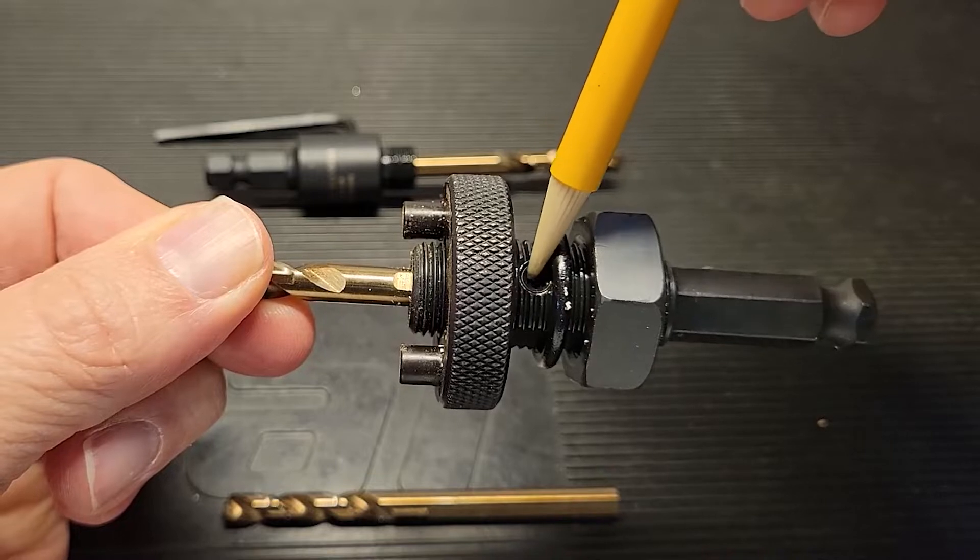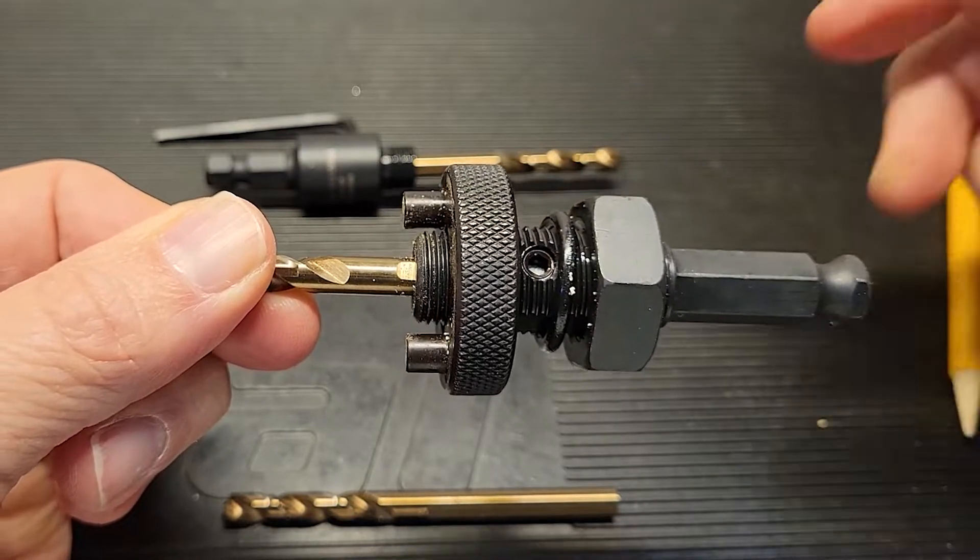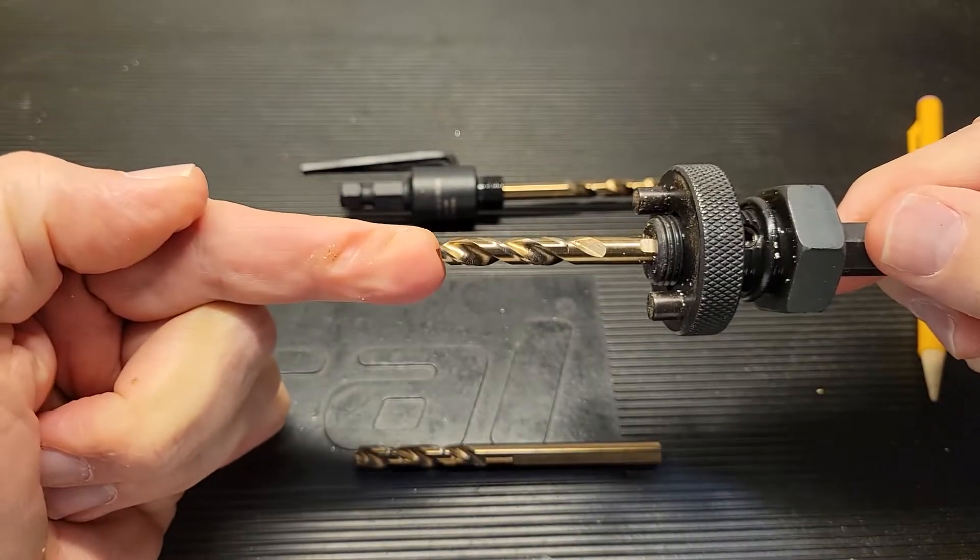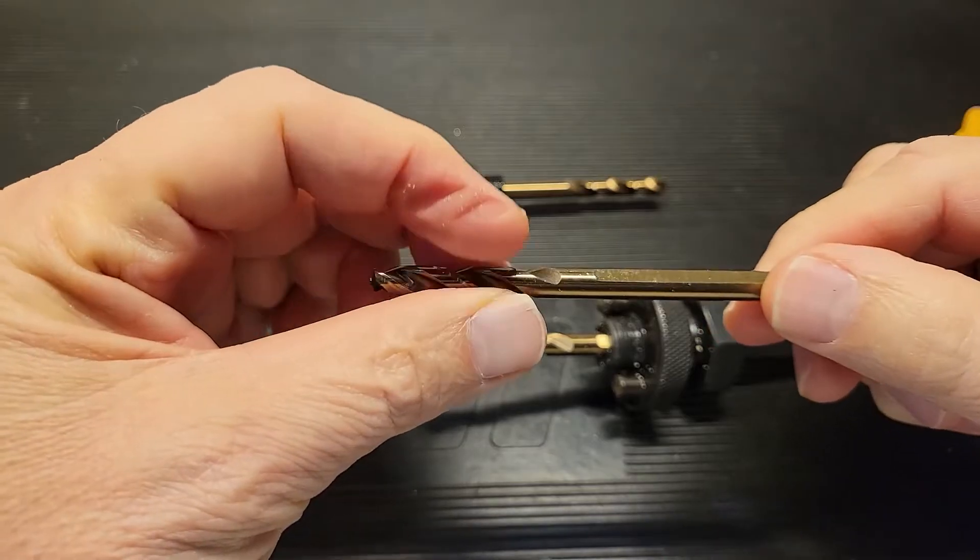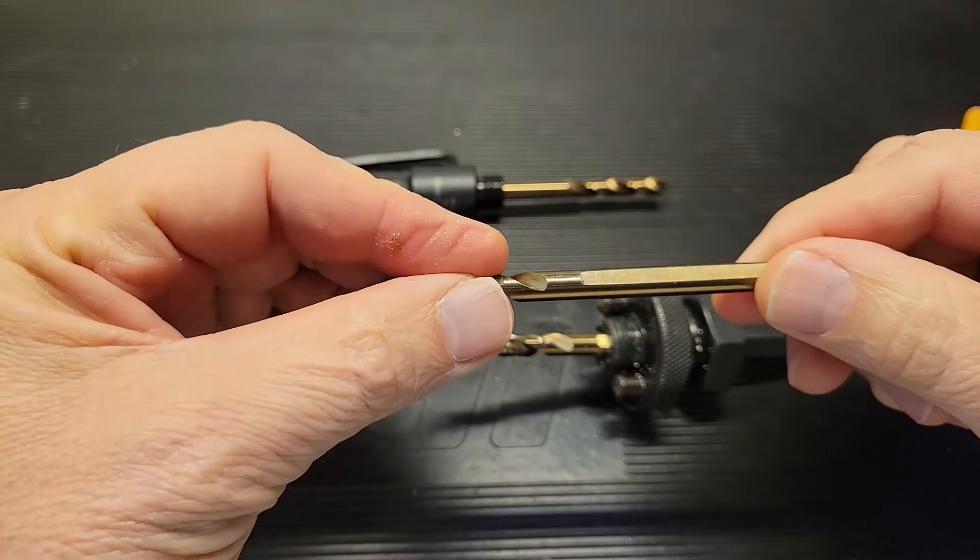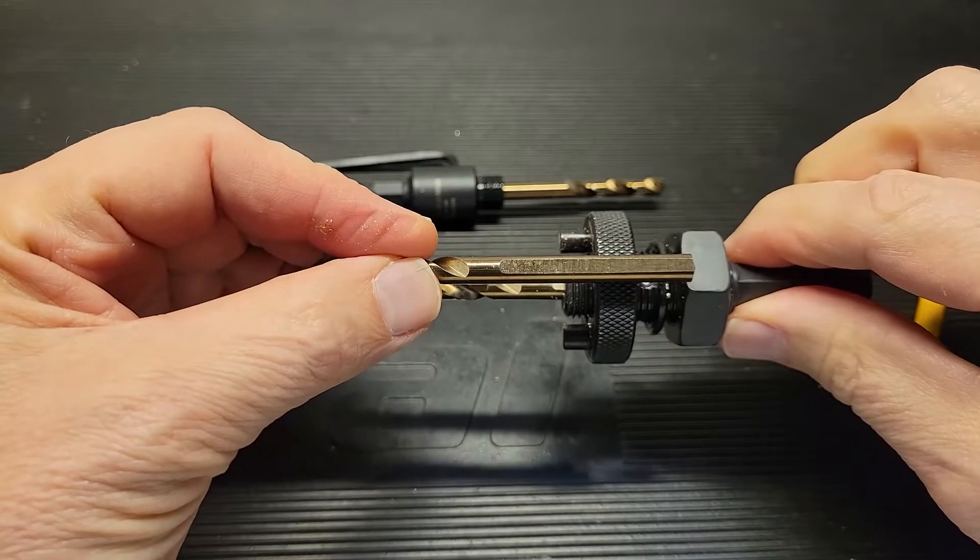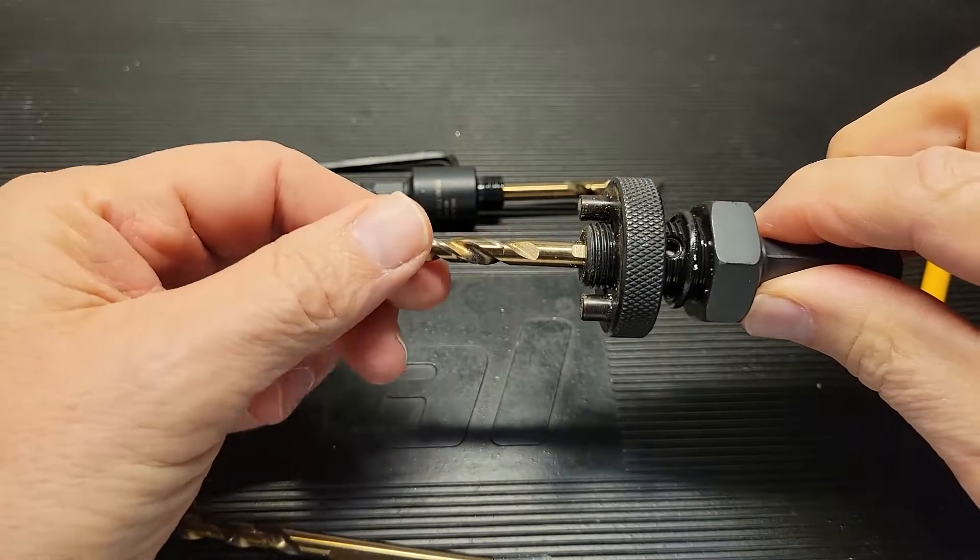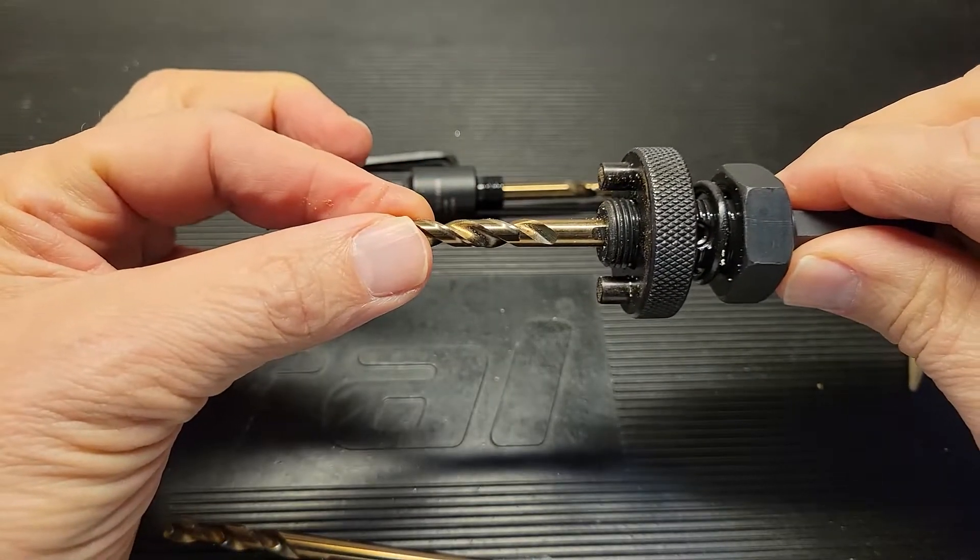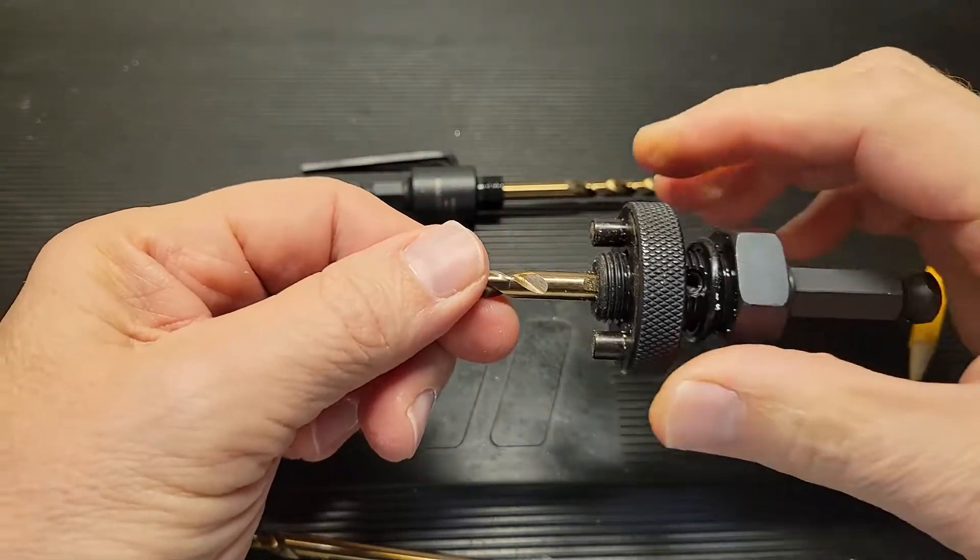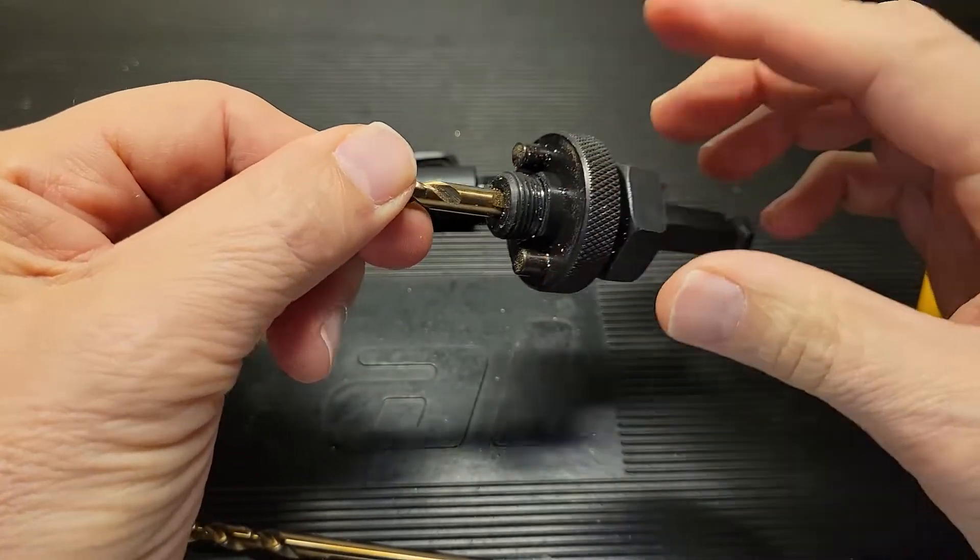You'll see there's an opening here for an Allen key, and what that does is it allows you to disengage the pilot drill. This bit has a flat side to it, and it's this flat side that you're going to want to align with this hole so that when you put that Allen screw in there, it locks this pilot bit into place.